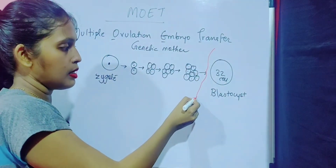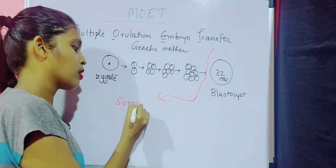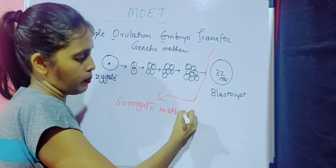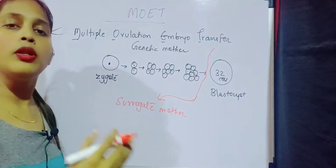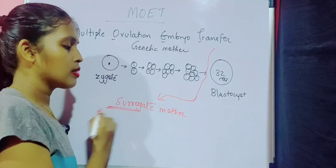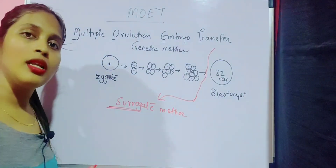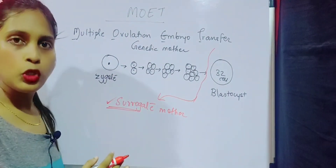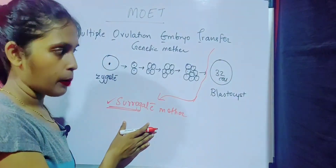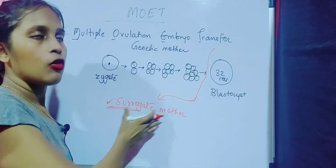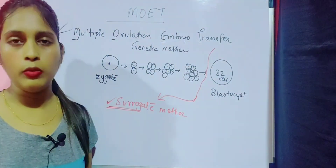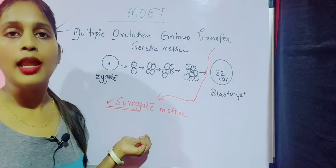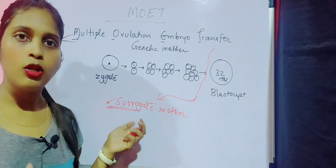This blastocyst is introduced into the genital tract or reproductive tract of a surrogate mother. Further embryo developmental stages take place inside this surrogate mother, and all the progeny will be delivered by the surrogate mother. The genetic mother, after removal of the blastocyst, is free for the next cycle.